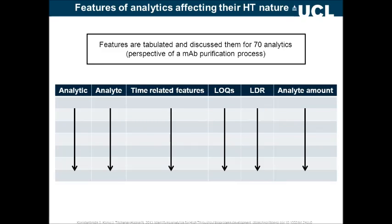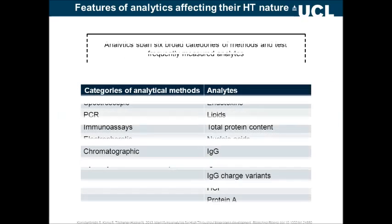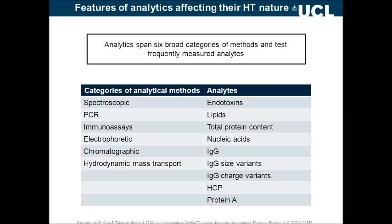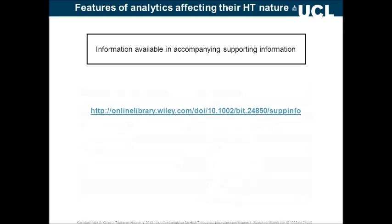After defining these features, we tabulated and discussed them in the paper for a selection of 70 analytical methods from the perspective of a mAb purification process. These methods are divided into six categories such as spectroscopic, PCR, immunoassays, electrophoretic, and chromatographic, and they test for analytes such as endotoxins, lipids, total proteins, nucleic acids, mAbs and variants, HCPs, and leached Protein A. All this information is available digitally in the accompanying supporting information, the link for which is shown.